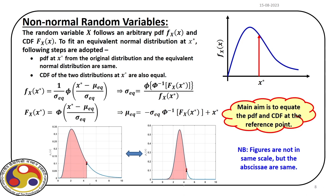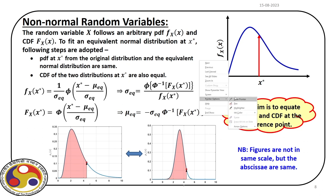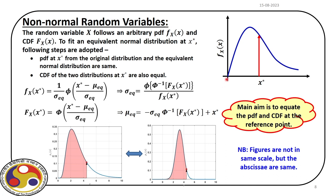Our next problem that we are going to discuss today is when we have non-normal random variables. Earlier we discussed how to consider non-normal random variables in our first order reliability problem. In this situation, what we do is we invoke a technique called equivalent normalization. Let us quickly brush up the mathematical model that we discussed earlier, where we have any arbitrary random variable described by its respective PDF.